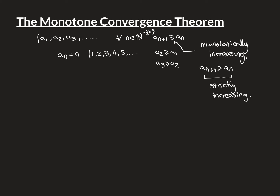This sequence a_n = n is also unbounded — it grows without limit. Monotonically decreasing means all terms get successively smaller: for all n in the natural numbers, a_{n+1} ≤ a_n. So a2 ≤ a1, a3 ≤ a2, a4 ≤ a3. If we make it a strict inequality, that's strictly decreasing. The monotone convergence theorem is about the broader monotonically decreasing type rather than strictly decreasing.